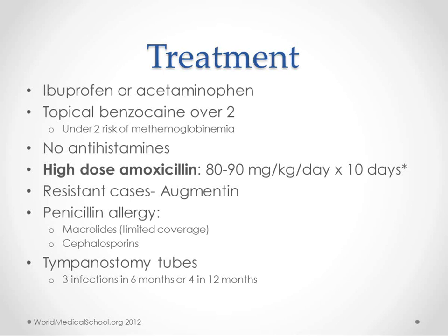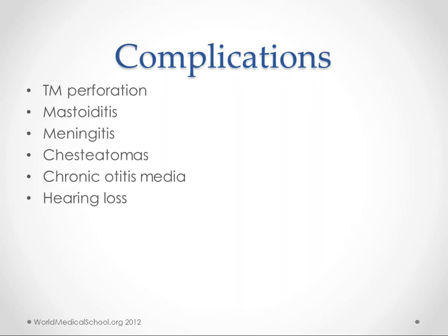Tubes is a big question — when do you put them in? That's up to the patient and you, but the minimum number of infections recommended before even considering tubes is 3 infections in 6 months or 4 in 12 months. If someone is recommending tubes after just a couple of infections over a couple of years, that's probably not a good idea. Complications we're trying to avoid include tympanic membrane perforation, mastoiditis, meningitis, cholesteatoma, chronic otitis media, and hearing loss — especially with chronic otitis media.